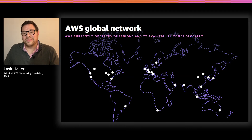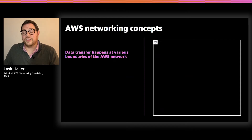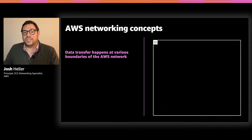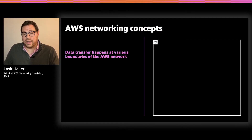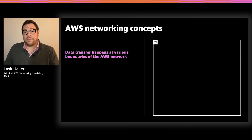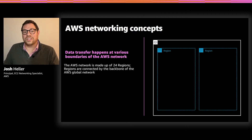Now let's take a closer look at some of the building blocks of our network. Fundamentally, data transfer happens when you cross boundaries in the network. We'll spend the next 10 minutes or so talking about the kinds of activities that drive network communication across those boundaries and how that communication is metered or measured. Let's look at the details of our networking building blocks, starting at the top and working our way down.